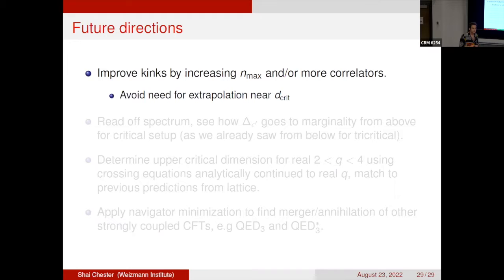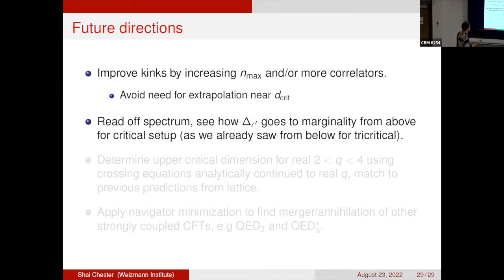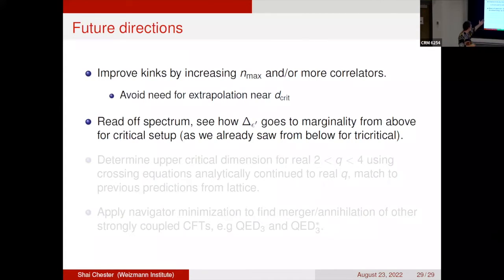Future directions include: improving the kinks by increasing bootstrap precision (higher nmax) and including more correlators, in hopes of precisely resolving the merger annihilation point; if higher nmax becomes feasible, reading off the spectrum to track how Δ_{ε'} goes to marginality from above in the critical setup.